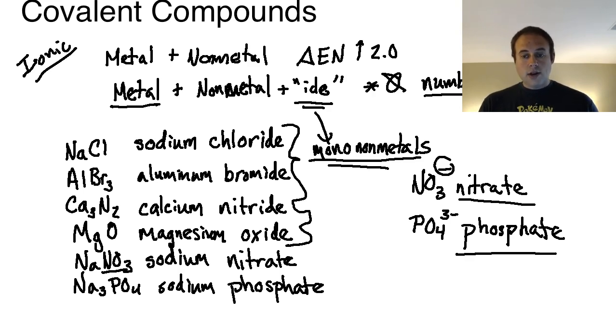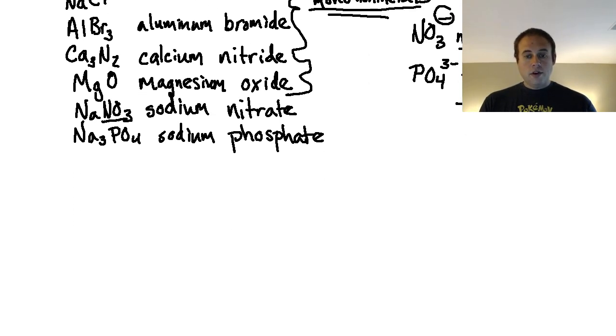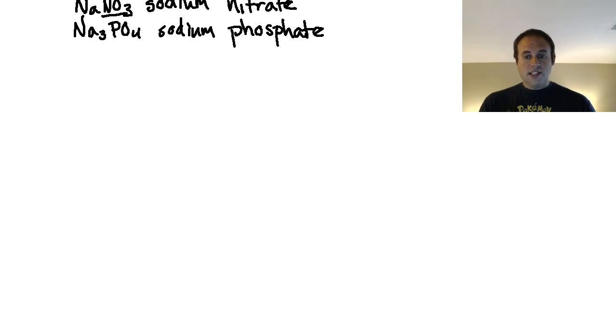That is ionic, that's how you would name ionic compounds. Now what about covalent compounds? For covalent compounds we run into a similar technique, but we need to add some prefixes and there's an exception to our rule. When we get ready to do covalent, let's define it: a covalent is usually a nonmetal bonded with another nonmetal.